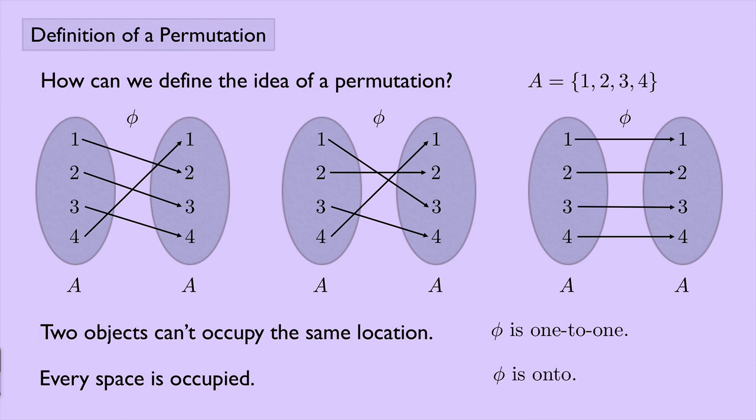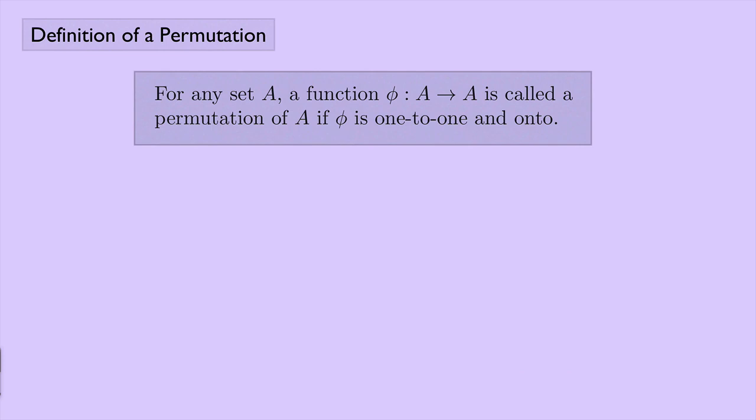So this gets at the heart of what a permutation is. So the definition is, for any set A, a function phi, which goes from A to A, is called a permutation of A if phi is one-to-one and onto.